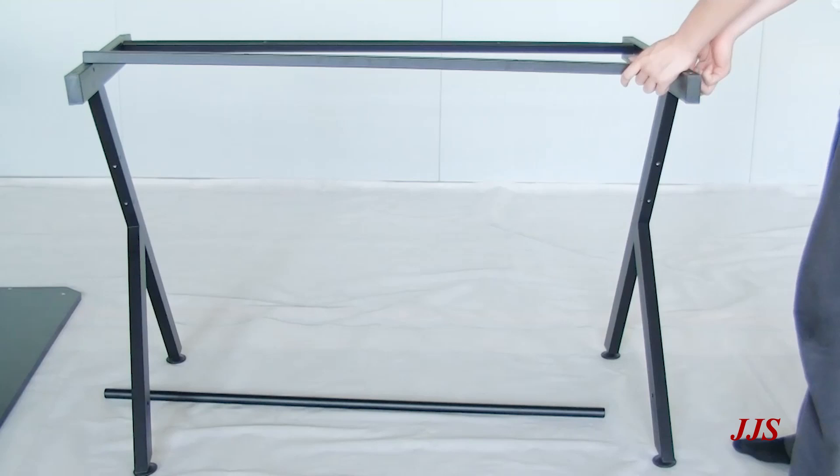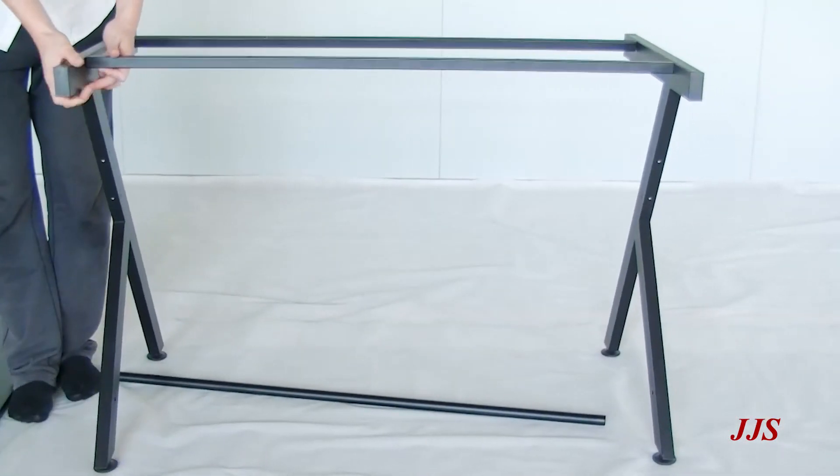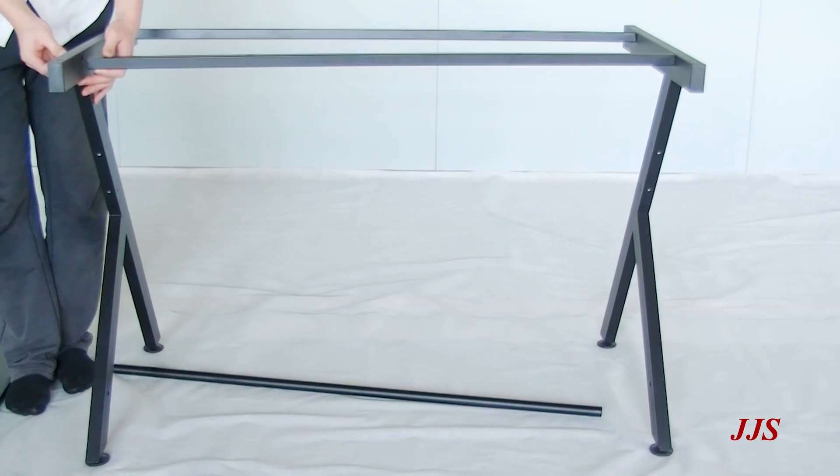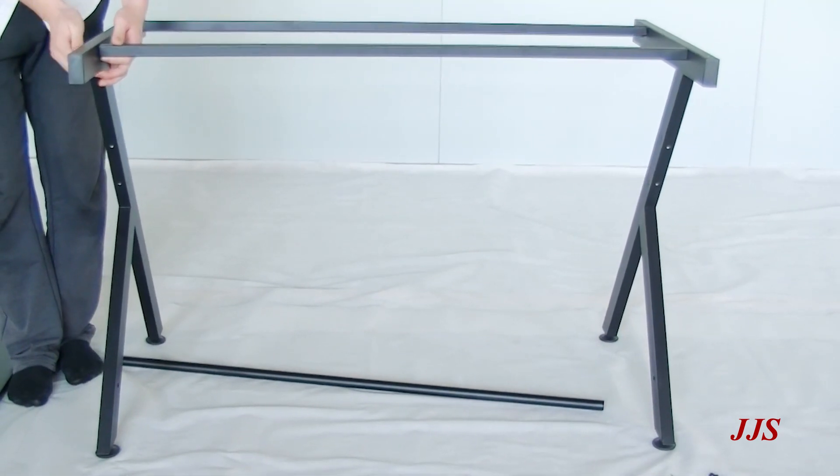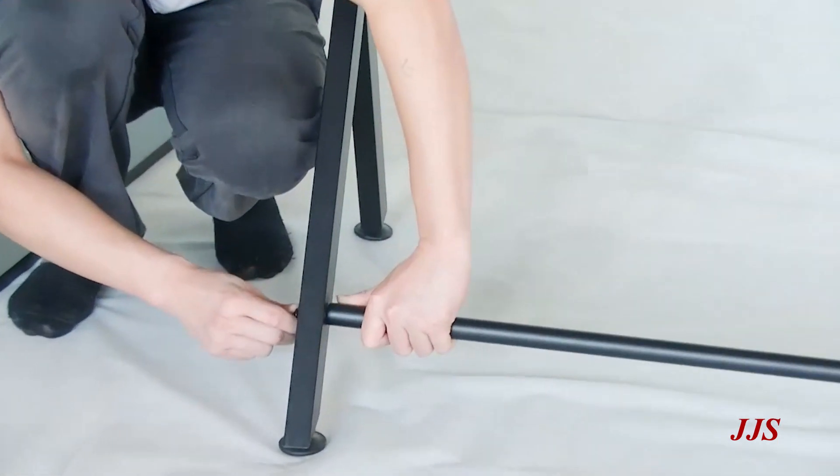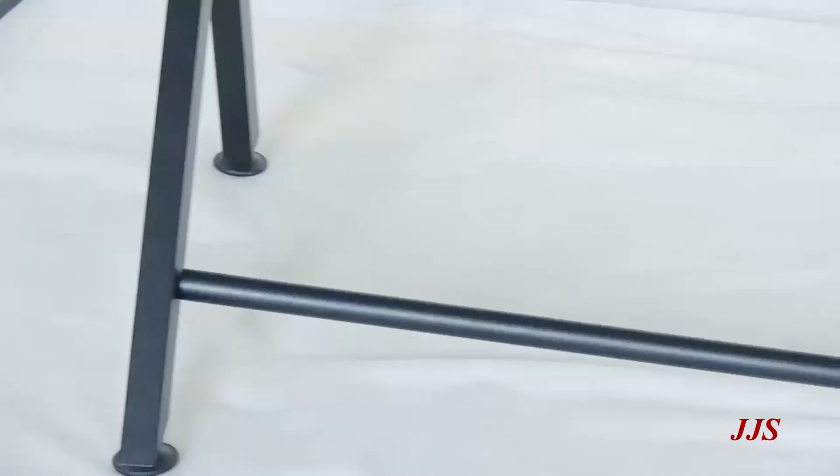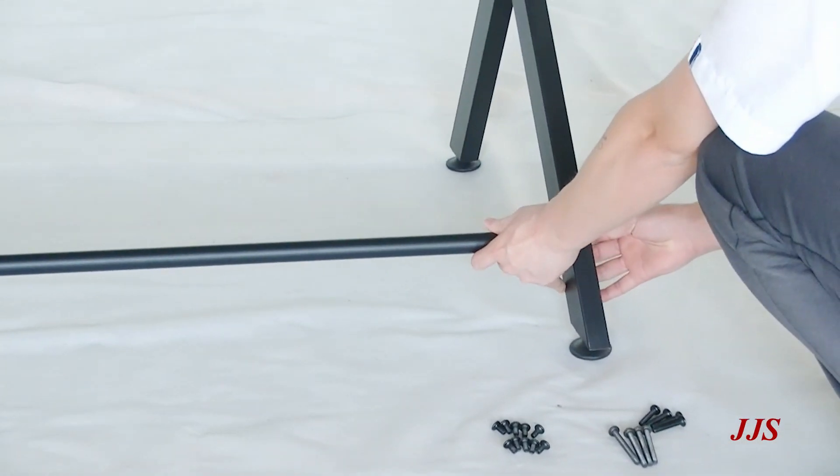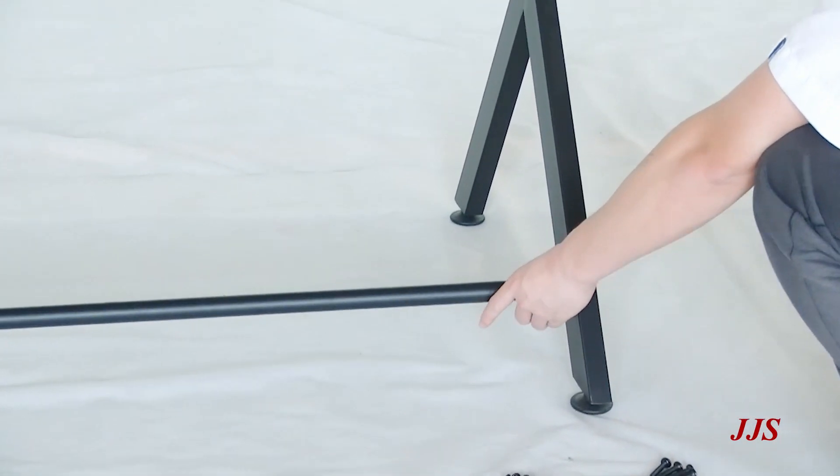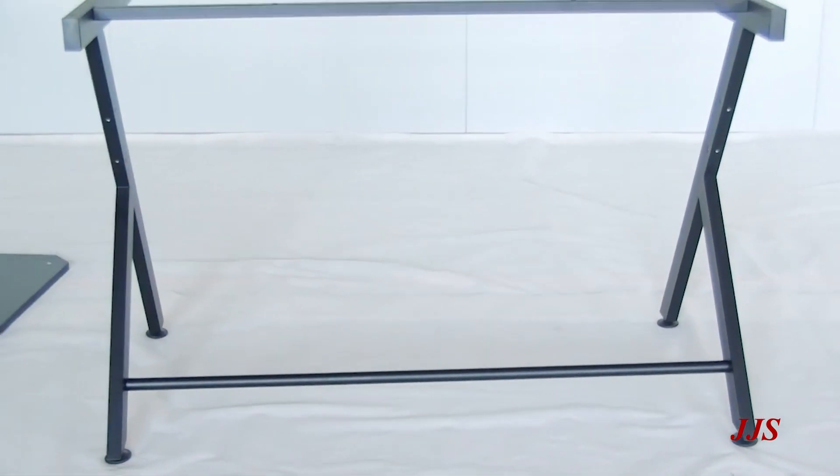Find the other square supporting beam and do the same thing. Now, attach the metal round supporting beam to the bottom of the table using the same screw. Once all the screws are in place, you can tighten them up using a Phillips screwdriver.